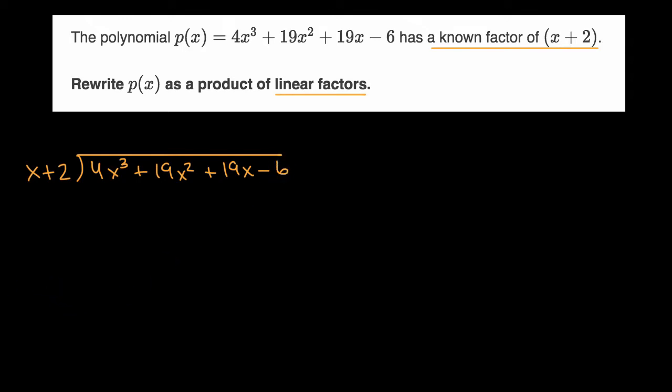And we've done this multiple times already. We look at the highest degree terms. x goes into 4x³, 4x² times. I put that in the x² or the second degree column. 4x² times x is 4x³. 4x² times 2 is 8x².